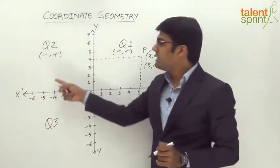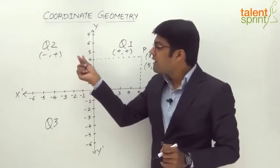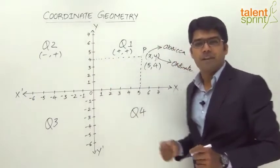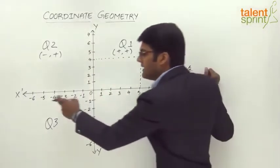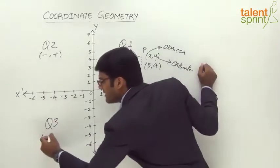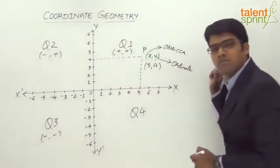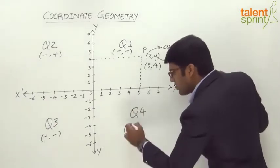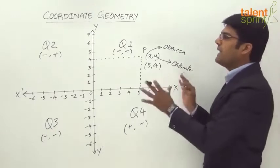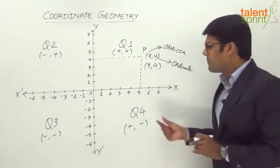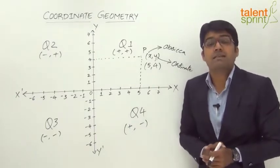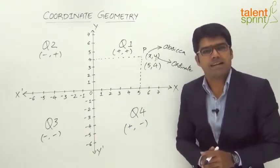If we take any point in quadrant 2, the abscissa will be a negative value and the ordinate will be a positive value. Likewise, in quadrant 3, as it is described by both negative x-axis and negative y-axis, the ordered pair will have both negative values. And in quadrant 4, positive x-axis with negative y-axis. So any point in this plane can be described with the help of an ordered pair giving the distance of that point from both mutually perpendicular axes.